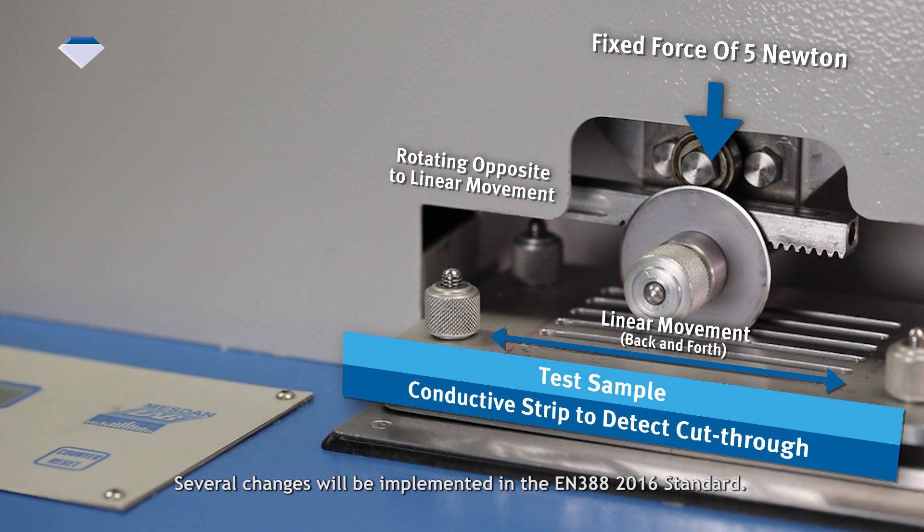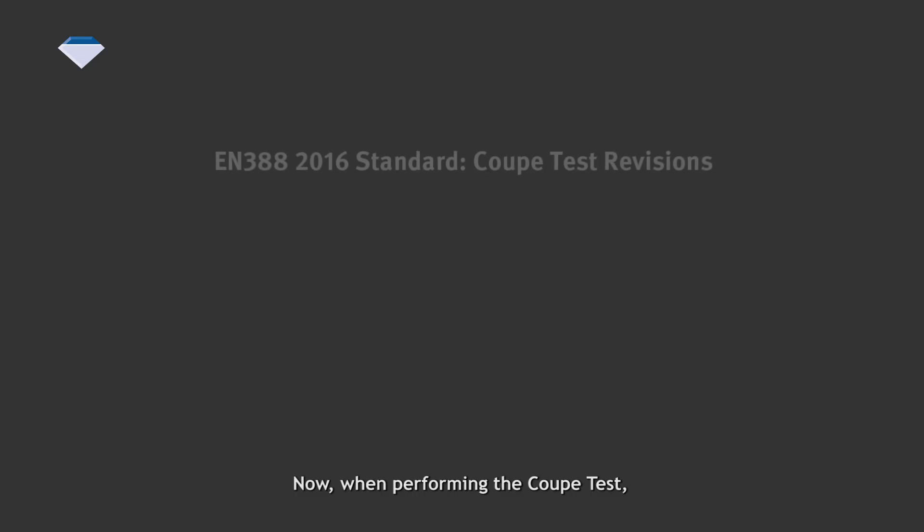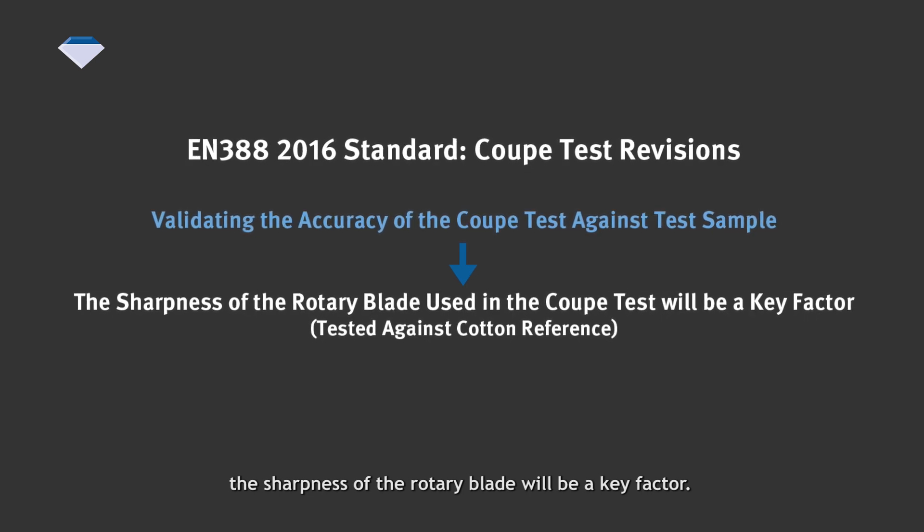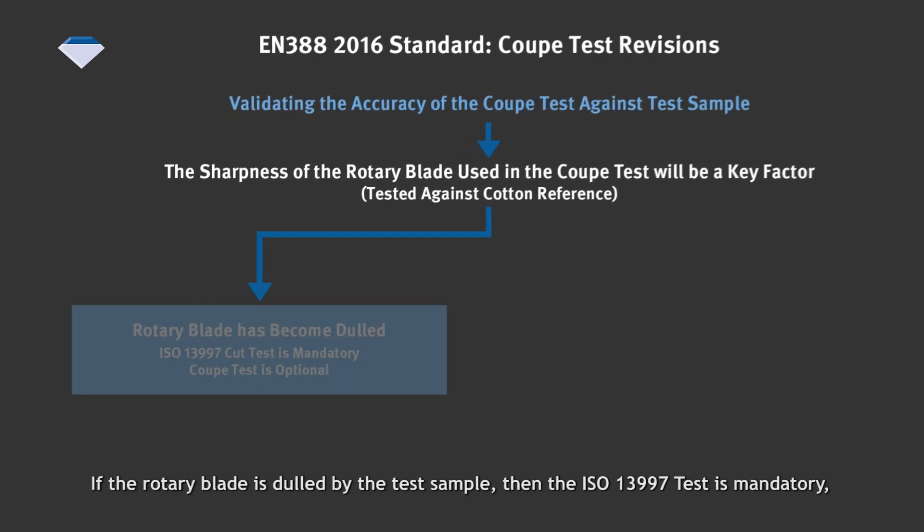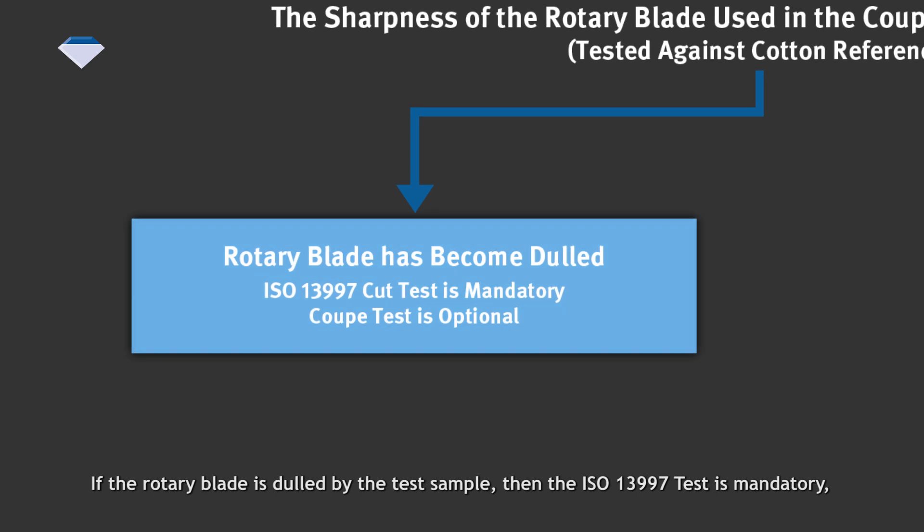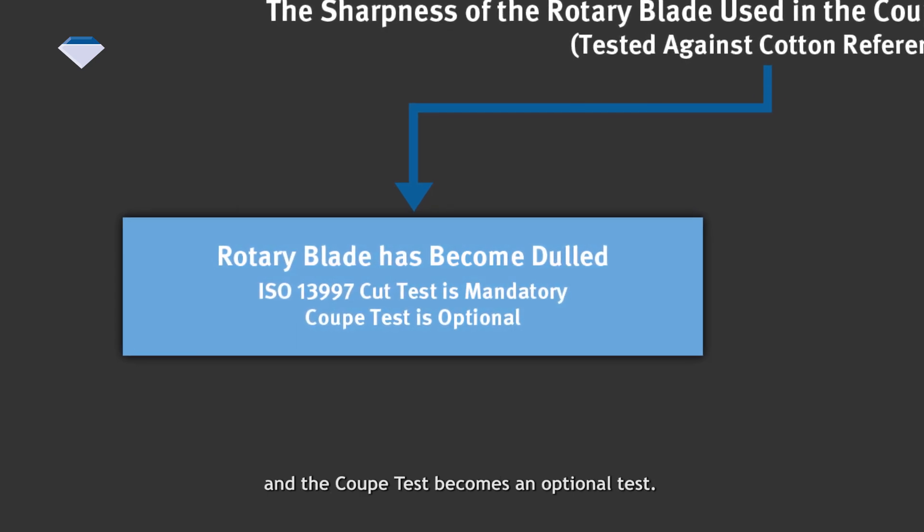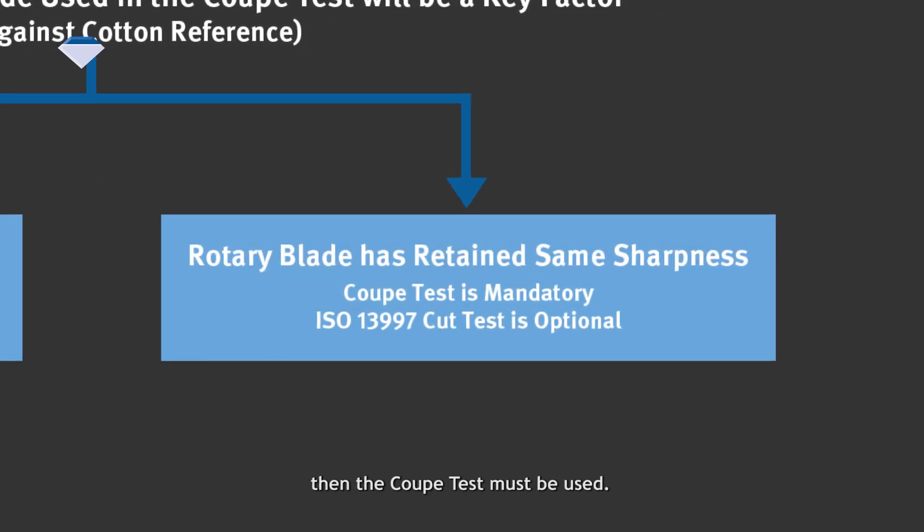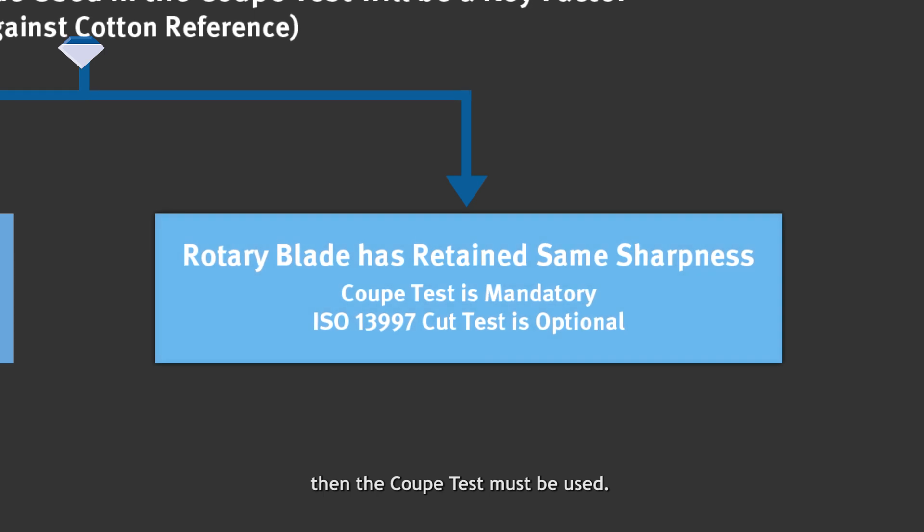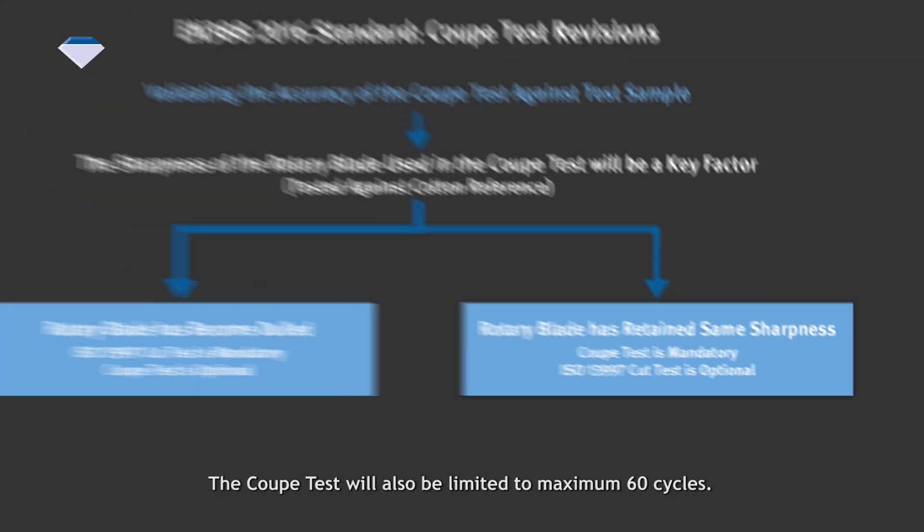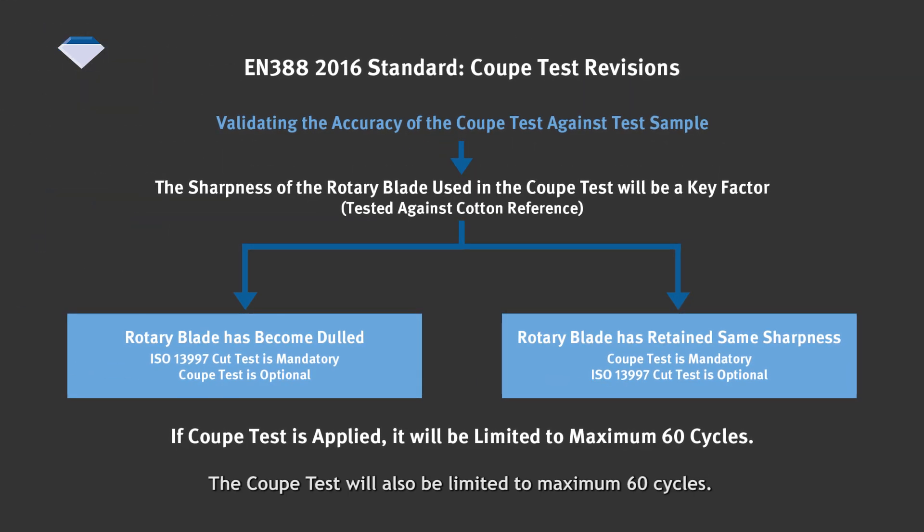Several changes will be implemented in the EN388 2016 standard. When performing the coup test, the sharpness of the rotary blade will be a key factor. If the rotary blade is dulled by the test sample, then the ISO 13997 test is mandatory and the coup test becomes optional. The coup test will also be limited to a maximum of 60 cycles.